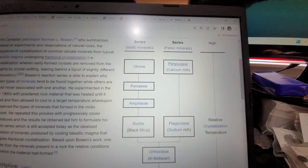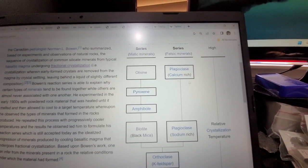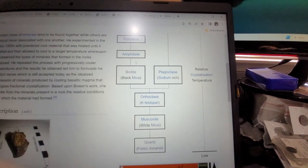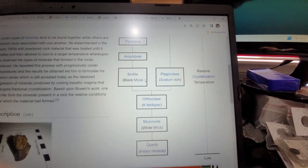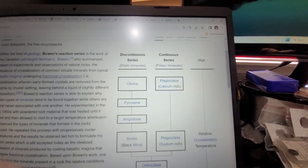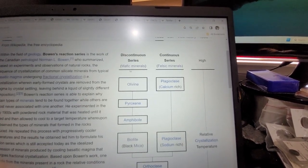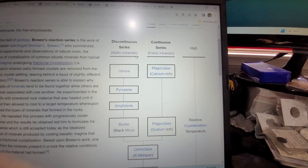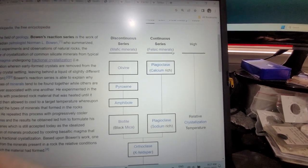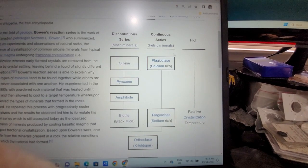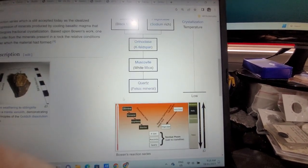Then you've got pyroxene, amphibole, and biotites. This side is the mafic series - those high in iron and magnesium. The other side has elements lower in iron and magnesium, higher in silica.